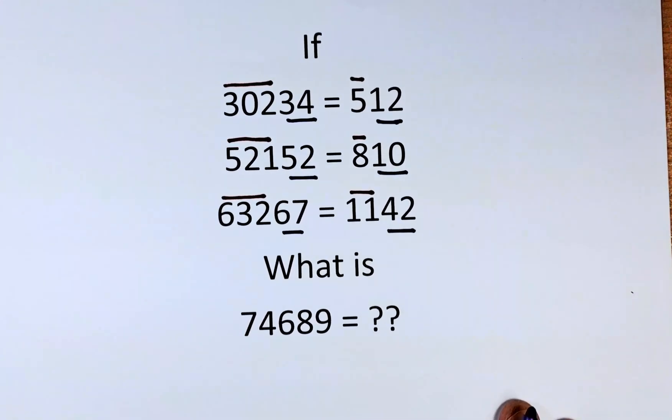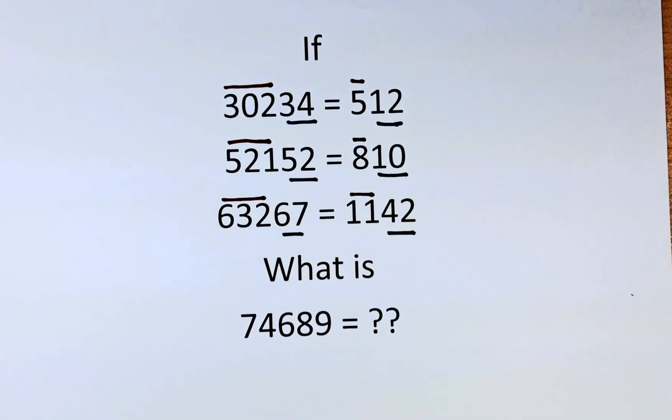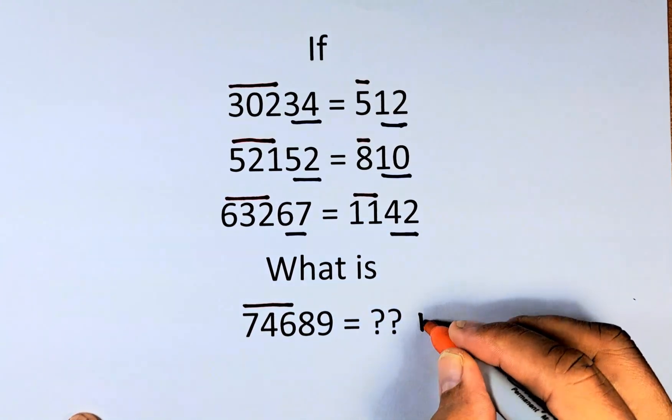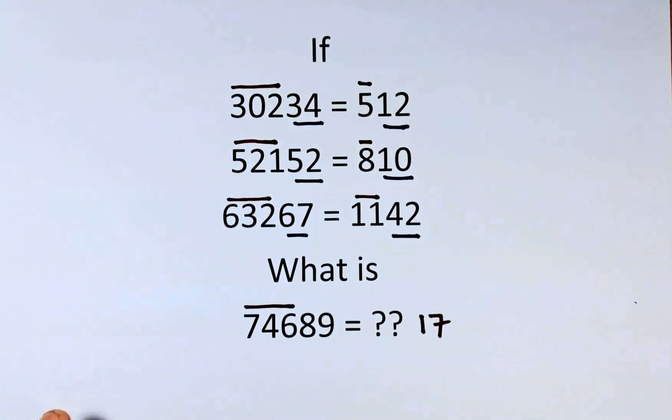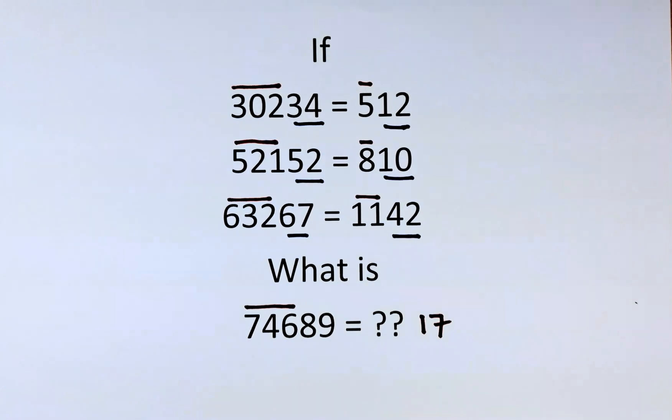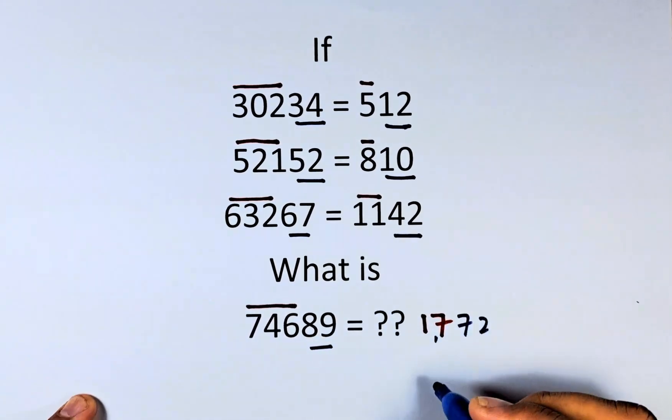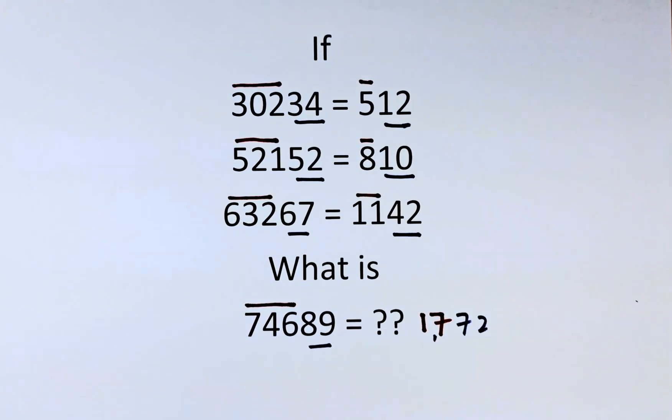So again, the question is, what is 74689 equals to? So 7 plus 4 plus 6, that will give us 17. And then we have 8 multiplied by 9, which is going to be 72. So the answer for 74689 is 1772.